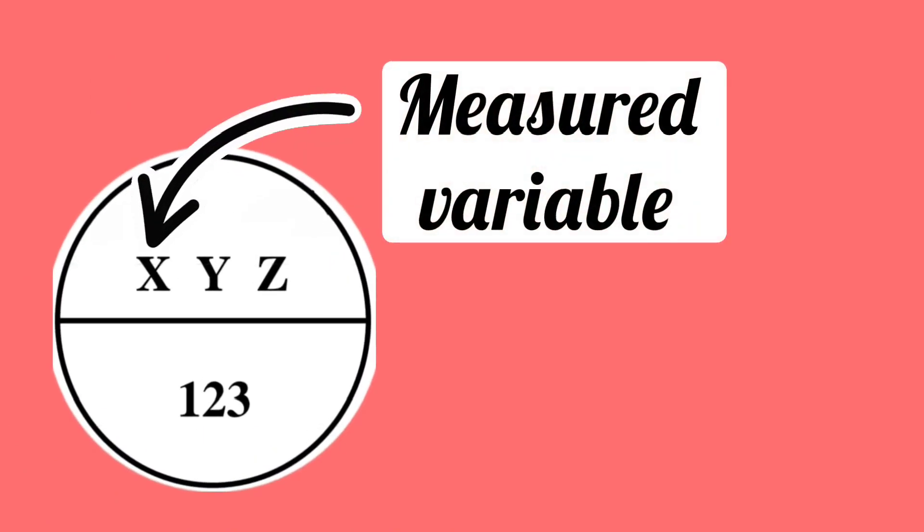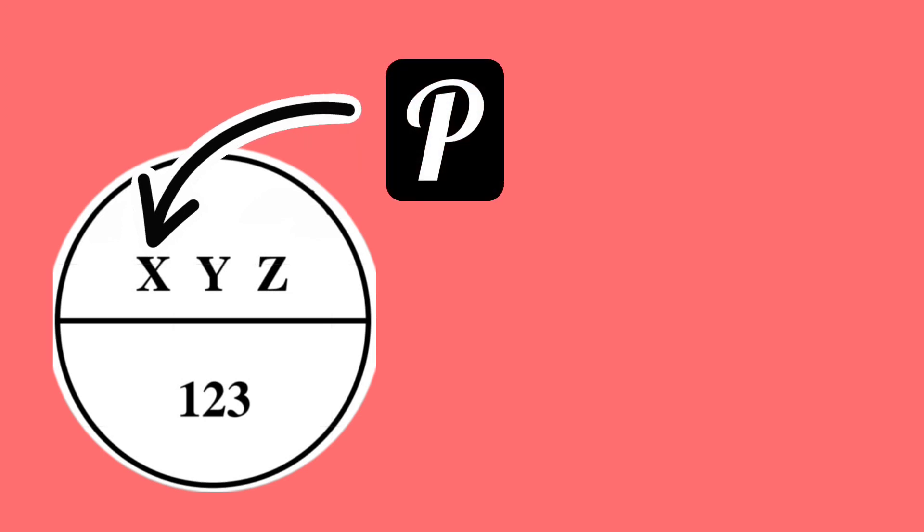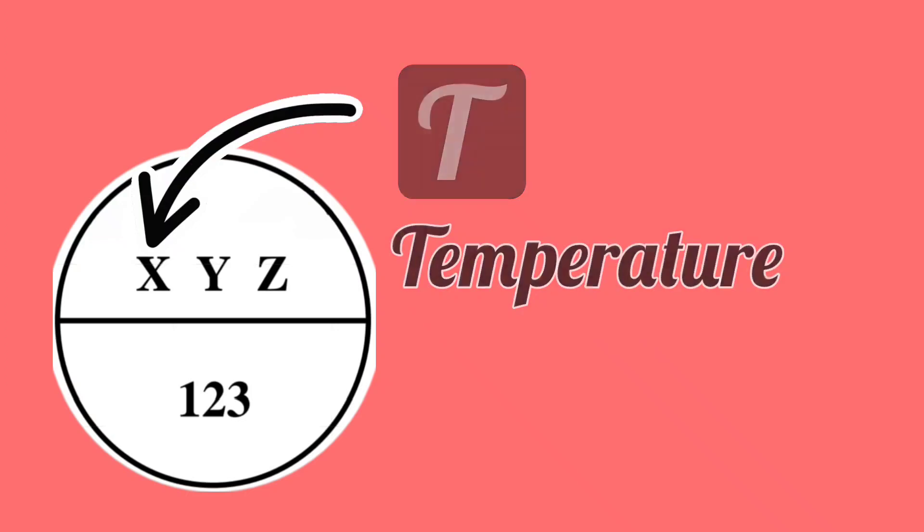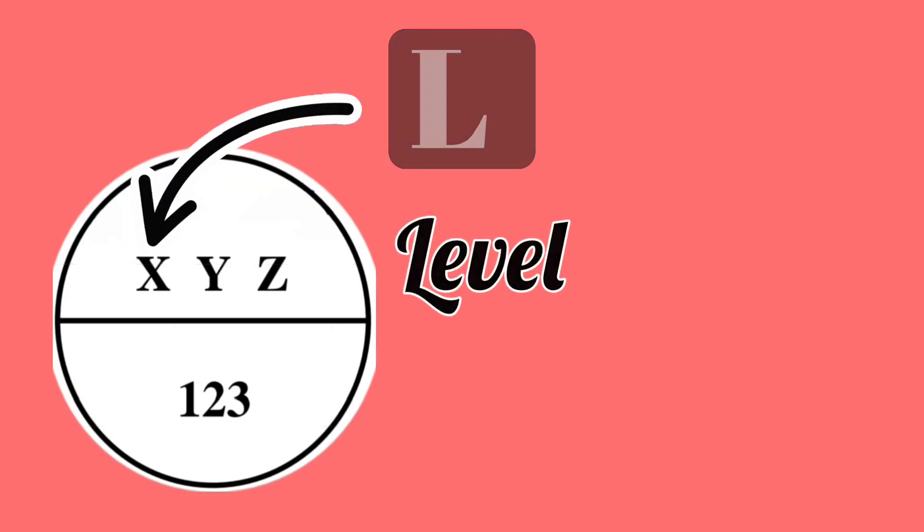In this, the first letter shows the measured variable. On the first letter, if P is written, it means pressure. T stands for temperature, L stands for level, and F stands for flow.